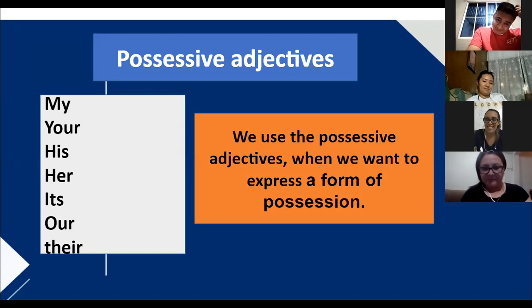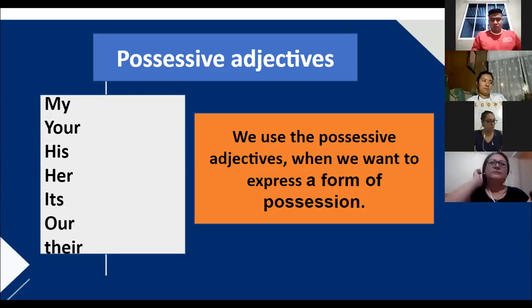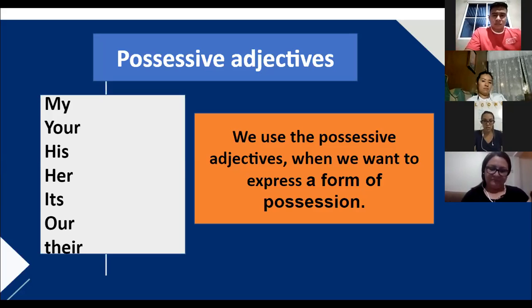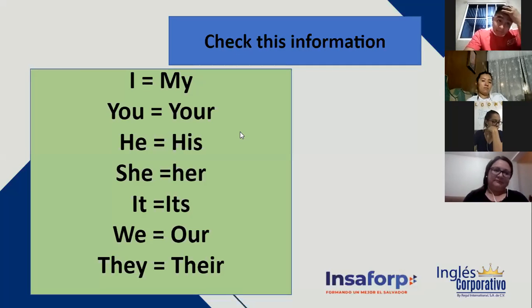Adjetivos de posesión — cuando algo le pertenece a alguien. La parte importante es que cada uno de ellos corresponde a un subject pronoun. No es que voy a usar cualquiera. Si quiero decir el nombre de Brian, no puedo decir 'my name is Brian' — sería 'his name is Brian.' Si hablo de una señorita: 'her name is Graciela,' not 'his name is Graciela.' La parte importante de los possessive adjectives es memorizarlos según el subject pronoun.